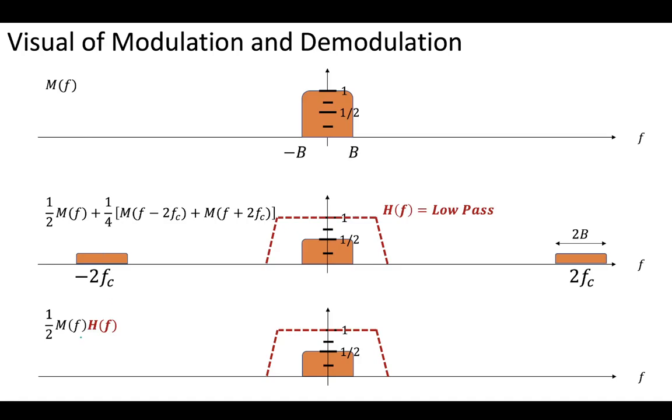If we take our original message and put it through this filter, we'll get our original message back. The only harm done is that we've gone from having 1 as the amplitude to 1 half as the result of multiplying it by those two different cosine waves. Our original message has now been recovered at the receiver, and we did that by multiplying by a cosine wave at the receiver.